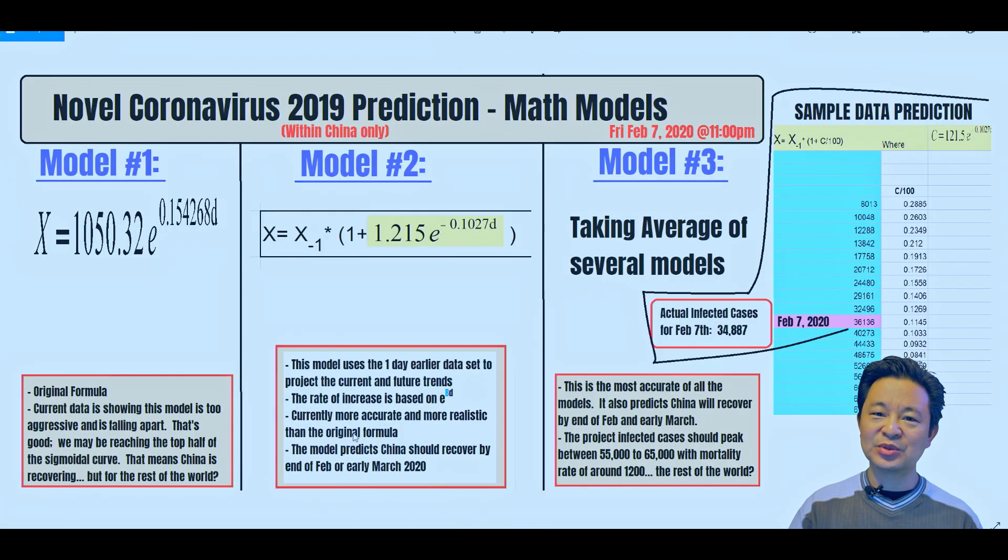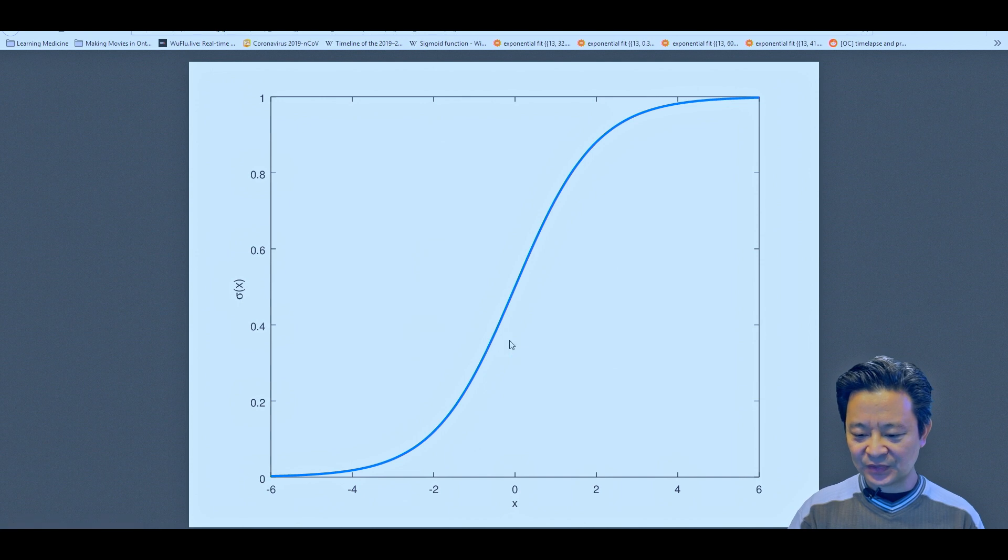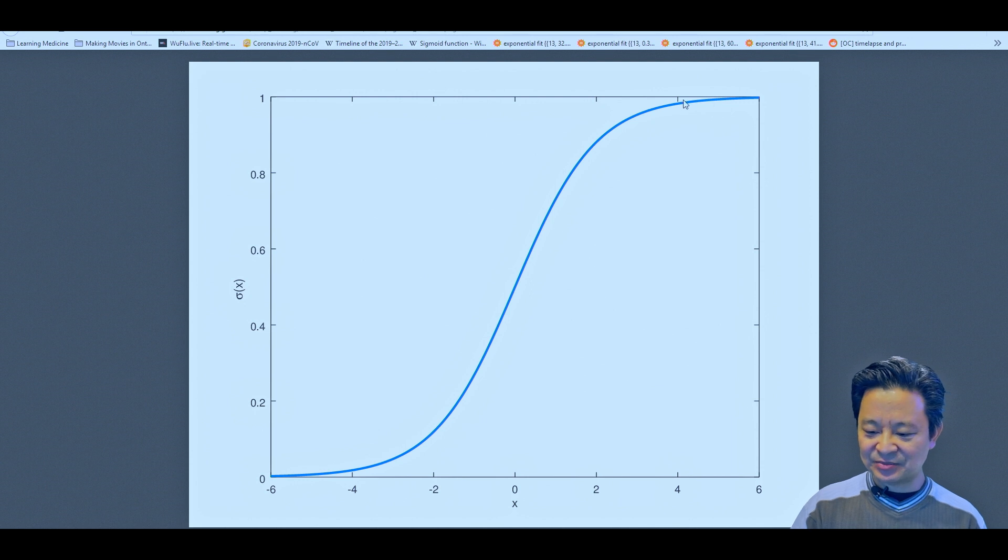This model over time doesn't work because it assumes the growth is almost doubling. But China is actually doing a good job containing the virus. The graph shows they're doing that, and it's forming more like a sigmoidal curve. Let me show you what a sigmoidal curve looks like. We are somewhere around here now, and according to my prediction we'll probably plateau around end of February and early March.